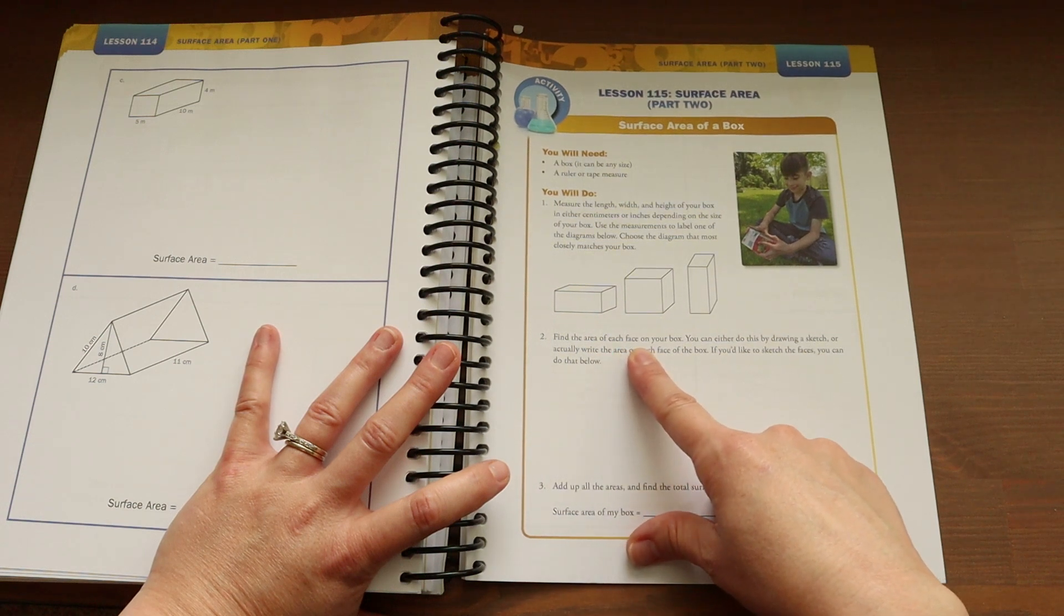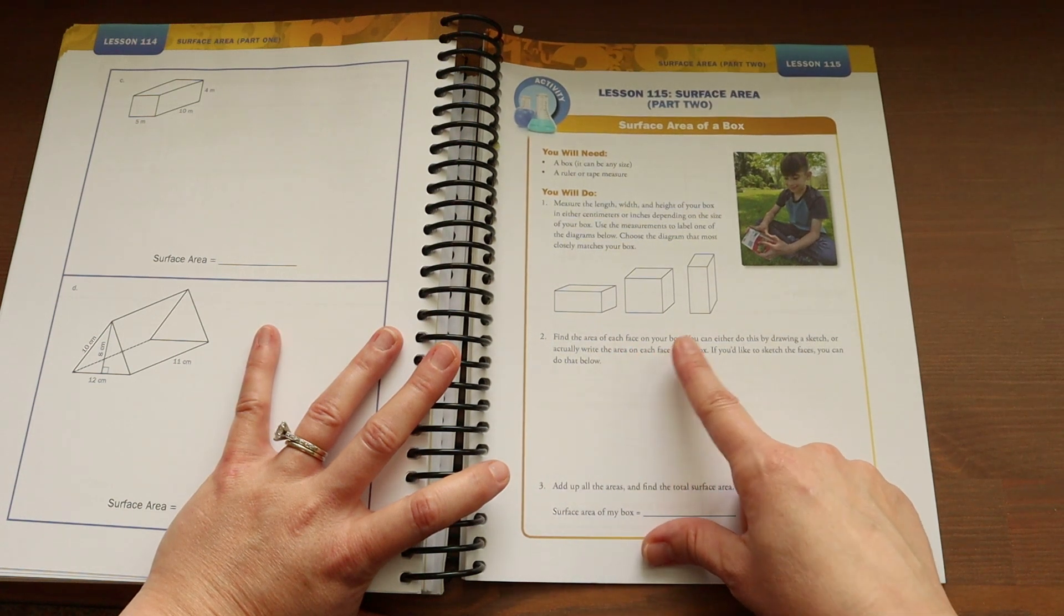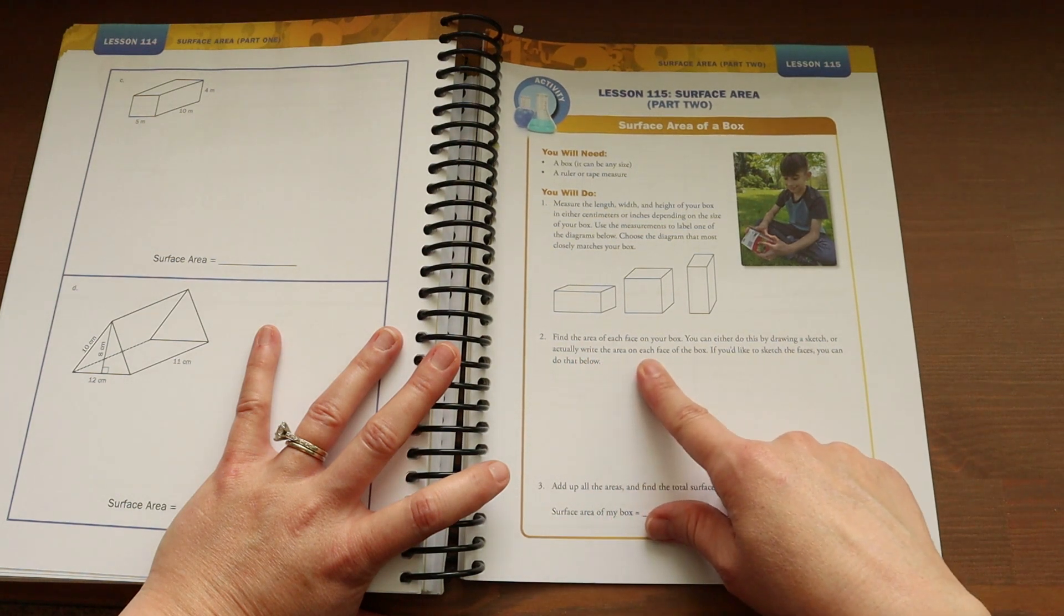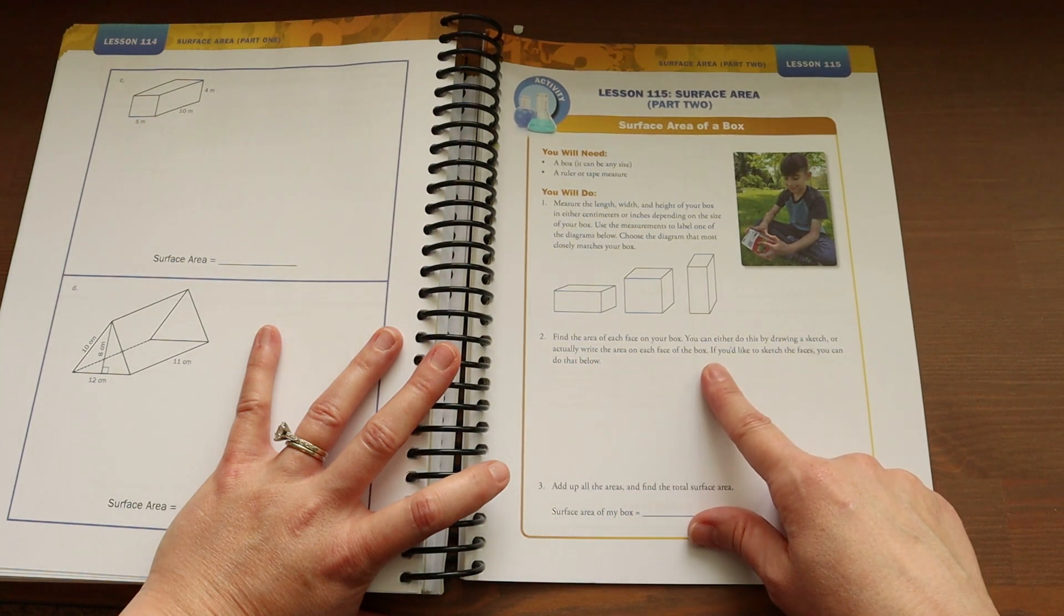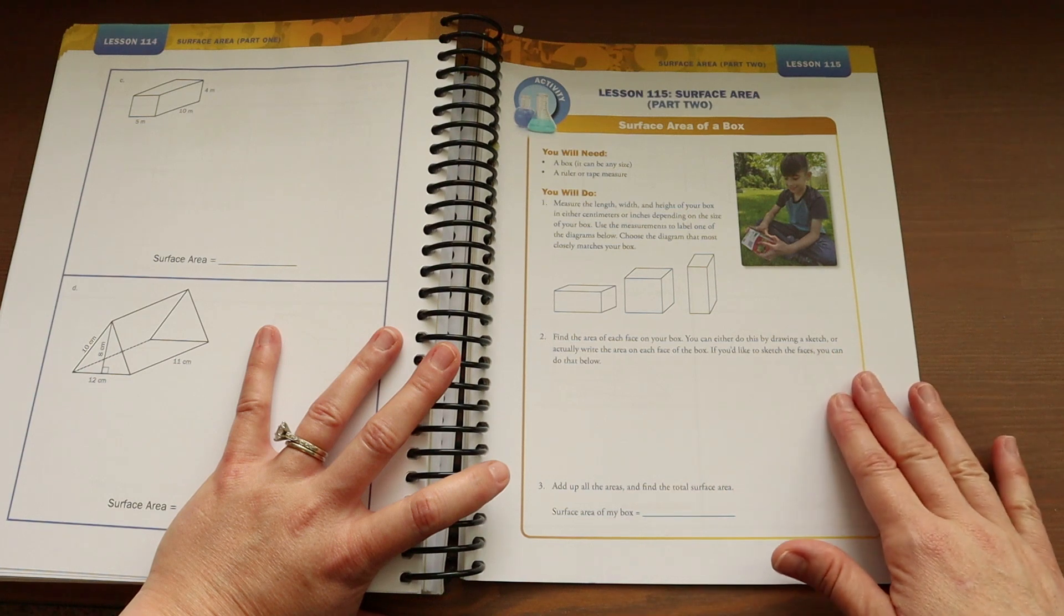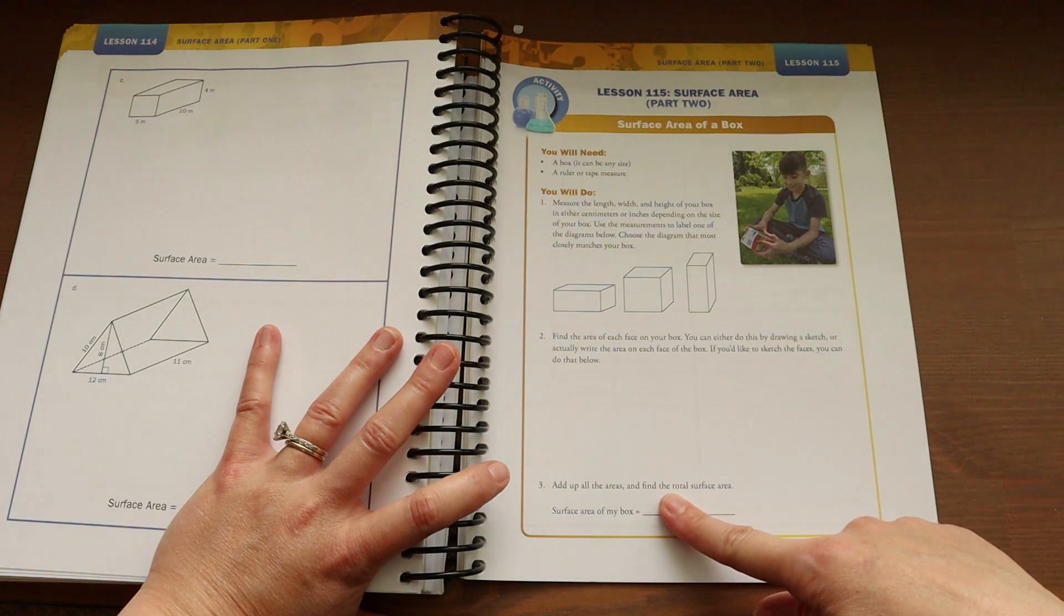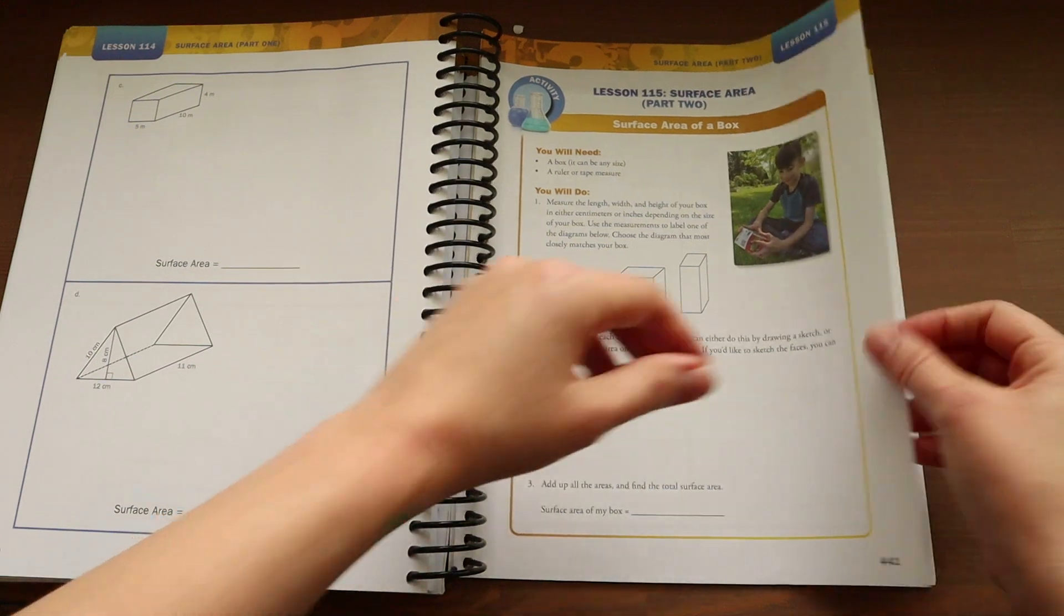Now they're going to find the area of each face of the box. They can do this by either drawing a sketch or actually writing the area on each surface of the box. If you'd like to sketch the faces, you can do that in this area below. And now you're going to add up all of the areas and find the total surface area. And you'll write the answer for that right here.